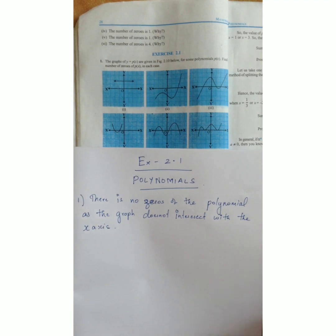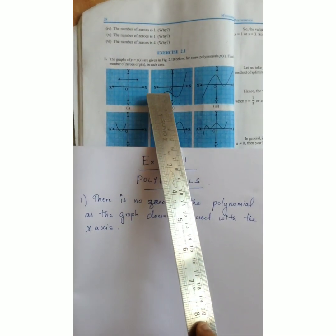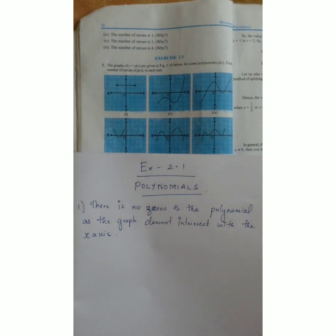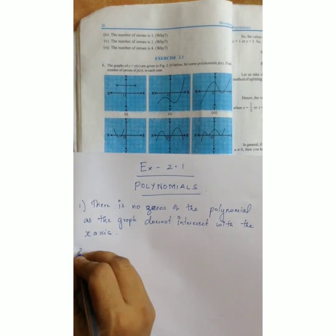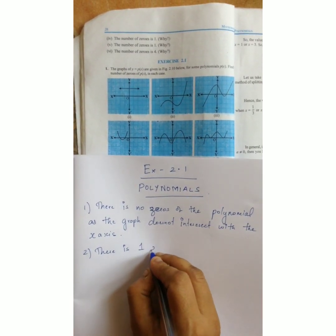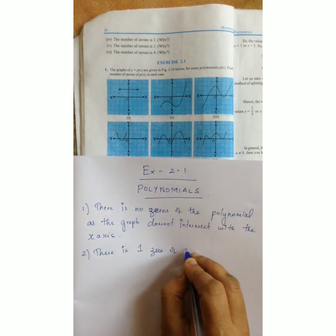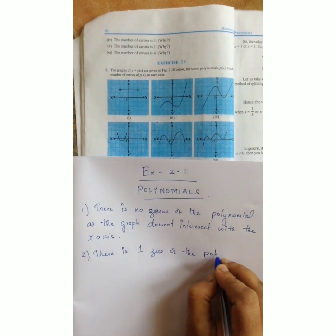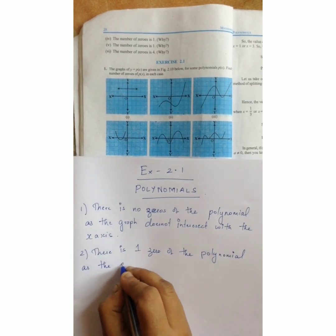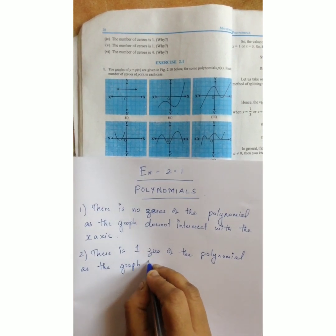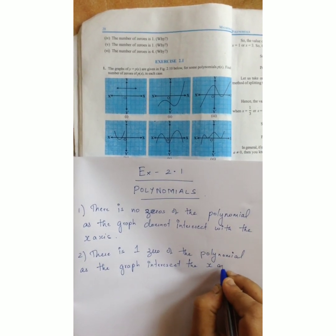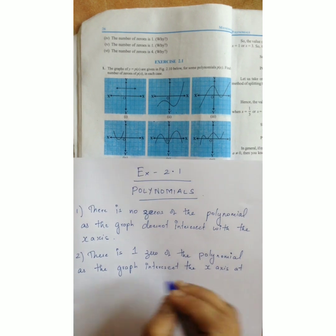Let's see the second sum. The graph intersects the x-axis at only one point. So the solution you need to give is: there is one zero of the polynomial, as the graph intersects the x-axis at one point.